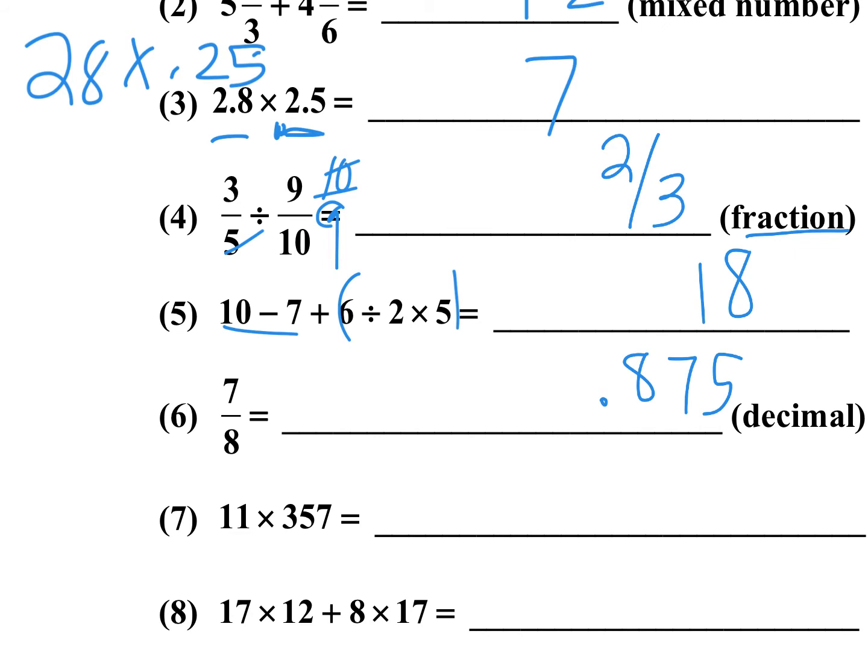7/8 as a decimal is 0.875 — that's just 7/8. Make sure you memorize all your eighths. Do not write 0.875 — that would be marked incorrect in this contest. For multiplying by 11: the shortcut is to write the ones digit (7), then add 5 plus 7 — that's 12, carry the 1, then 3 plus 5 is 8 plus the carried 1 is 9, and bring down your 3.